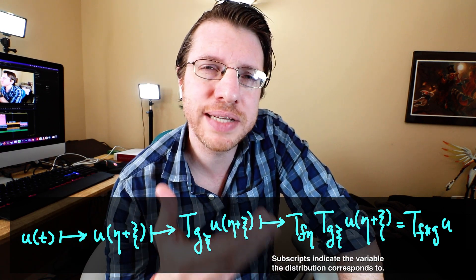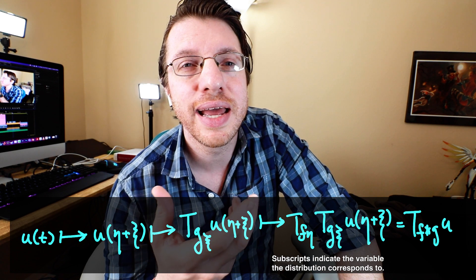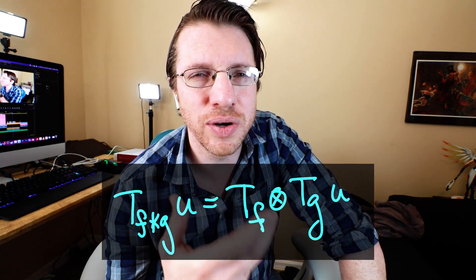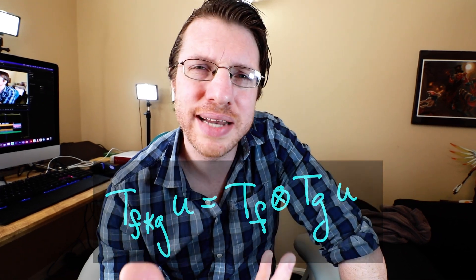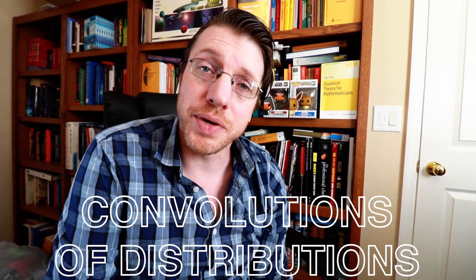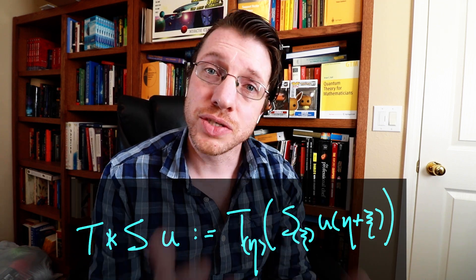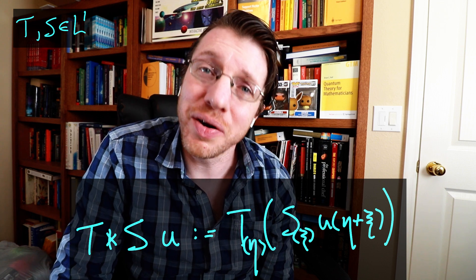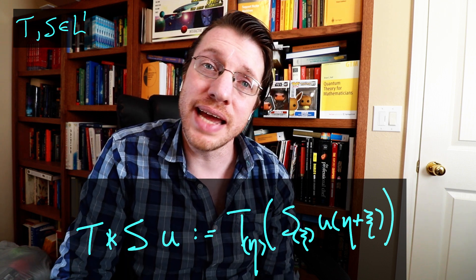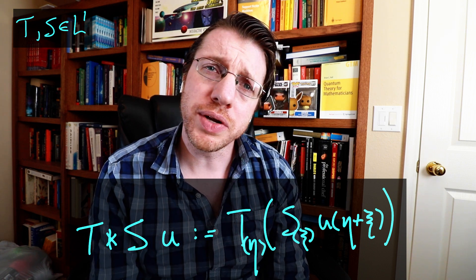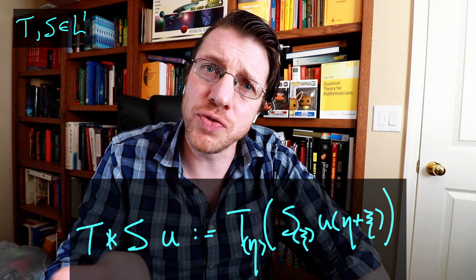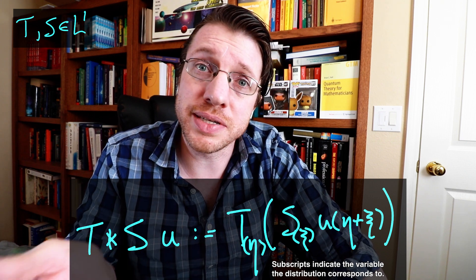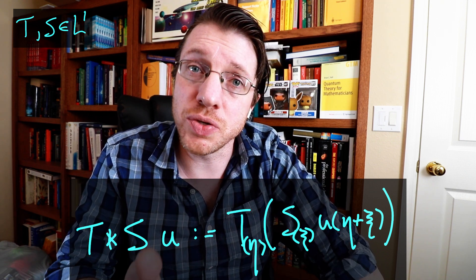What you ultimately get when you take the regular distribution corresponding to a convolution is something called the tensor product of distributions. This leads us to the definition of the convolution of two distributions: we define it as the tensor product of those two distributions. If we take that tensor product and apply it to some u, we treat u as a function of two variables where we replace t with η + ξ, and then apply each distribution separately.